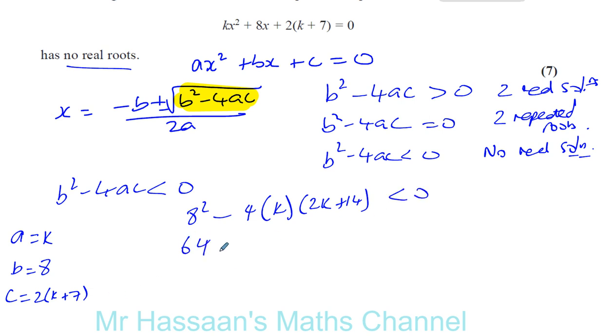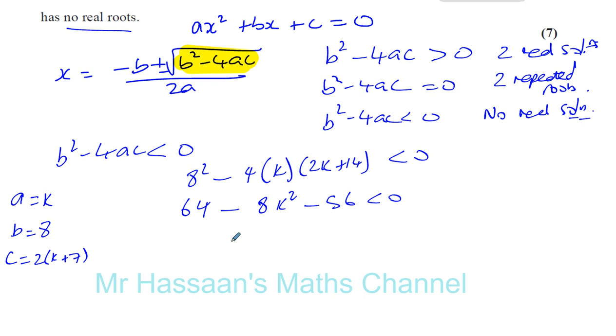So you have 64 minus, and you're going to have 4 times k times 2k. So that's 4k times 2k, that's 8k squared. And you're going to have minus 4 times 14, well that's 40 plus 16, 56 is less than 0.